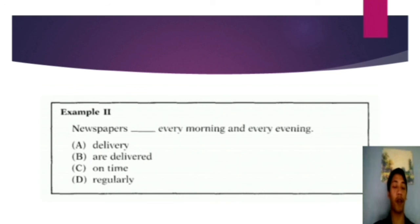And then, we have to identify the verb. Which one is the verb? A, delivery, B, are delivered, C, on time, D, regularly. I think the right answer is B, are delivered. So, the right answer for this question is B, are delivered.